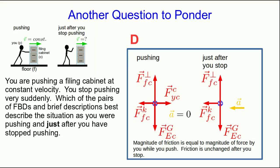This is, in some sense, mostly about inertia. You know that if you're pushing the filing cabinet at constant velocity, then the acceleration is zero and the vector sum of all the forces has to be zero. And so that just tells you that the force that you're exerting must equal the magnitude of the kinetic friction force.